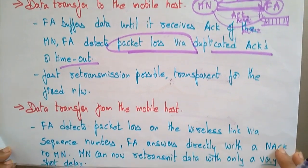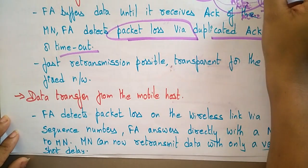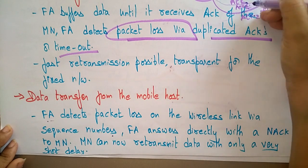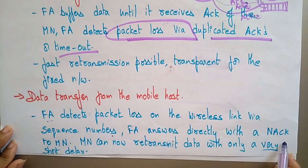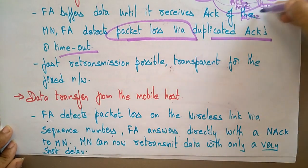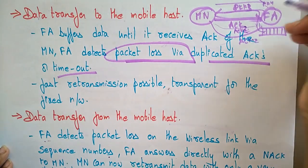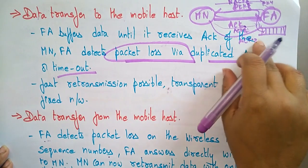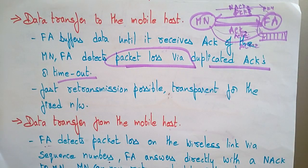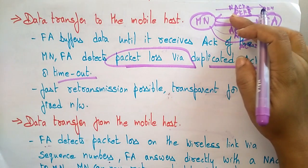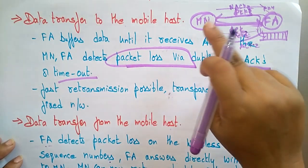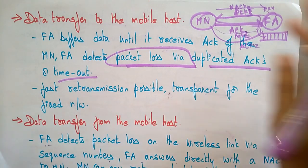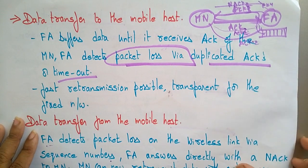For data transfer from the mobile host, the foreign agent detects a packet loss on the wireless link via sequence numbers. The foreign agent answers directly with a negative acknowledgement to the mobile node. When the mobile node receives the negative acknowledgement, it retransmits the data with only a very short delay.